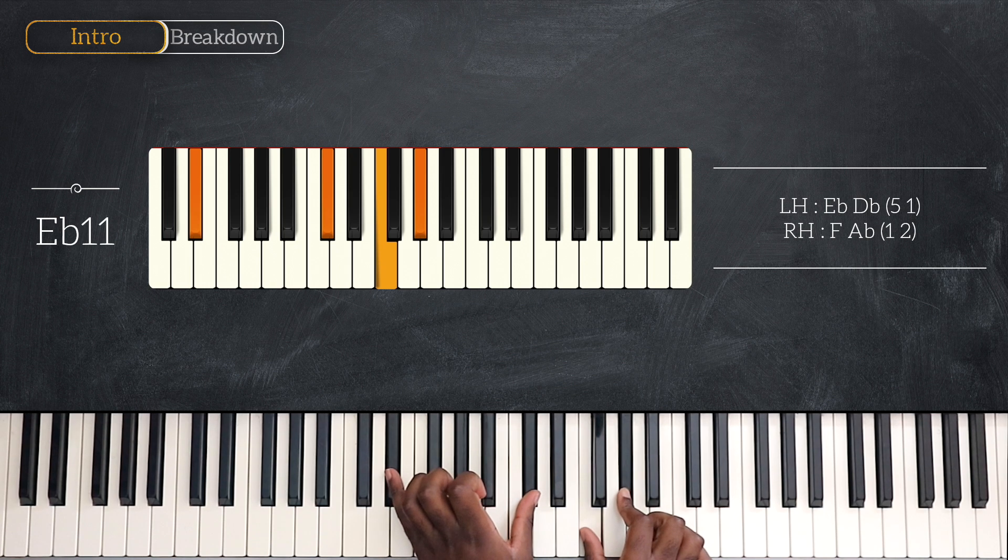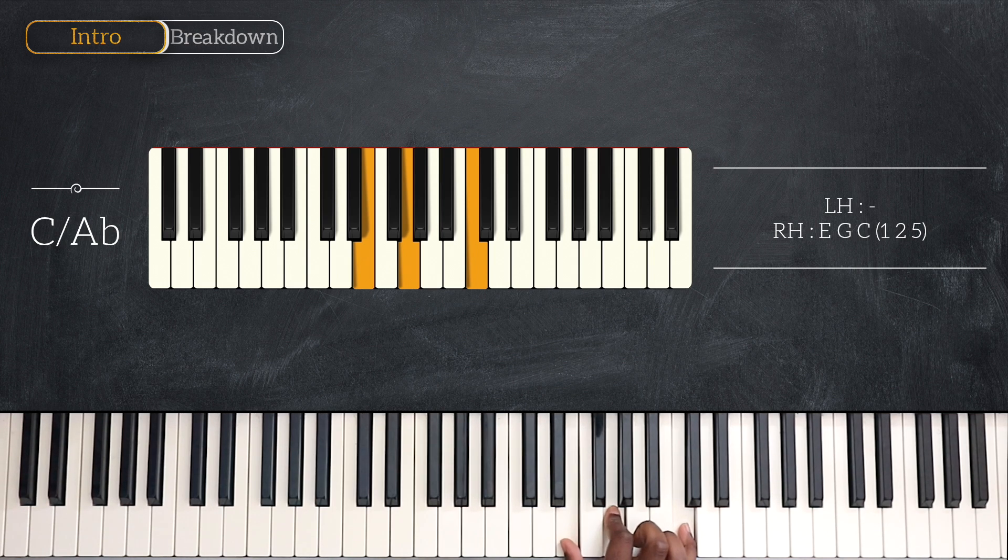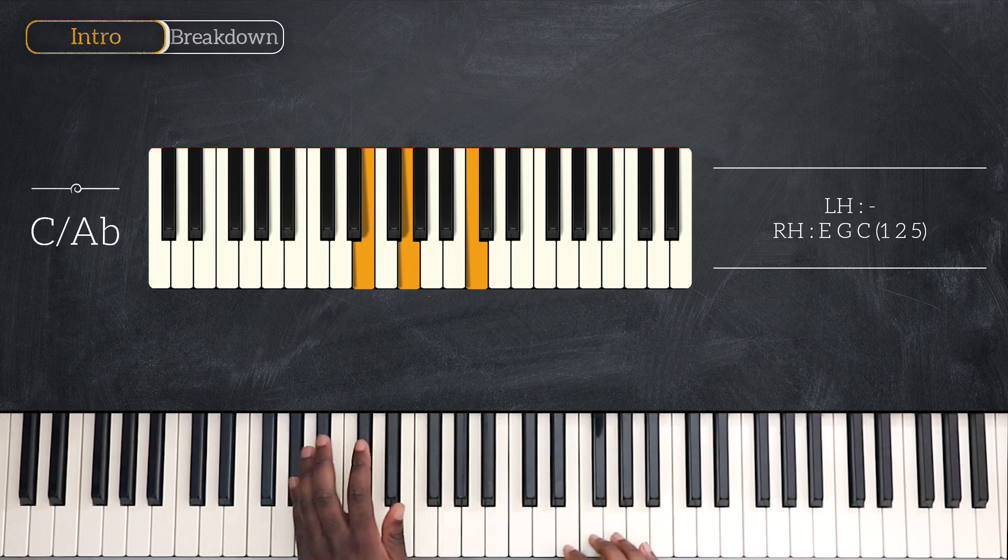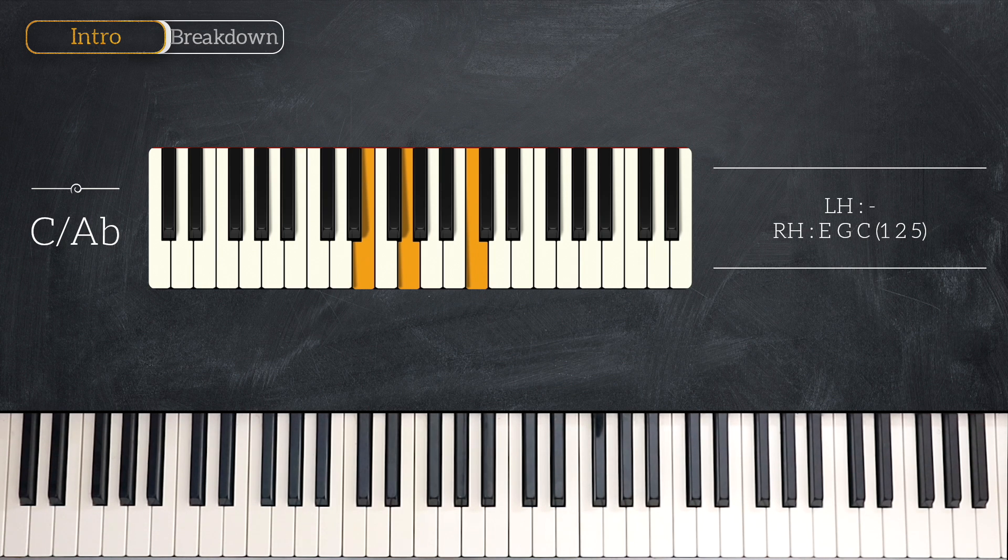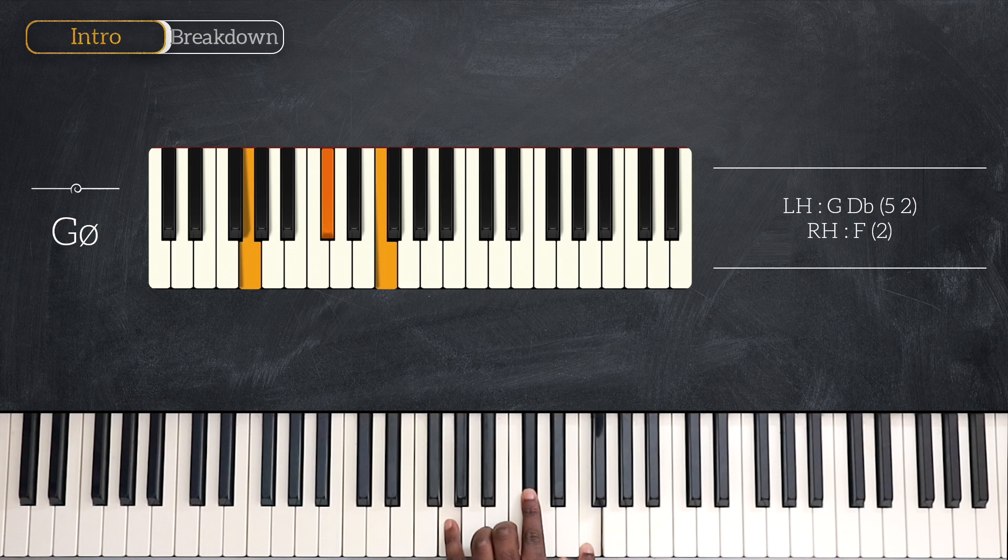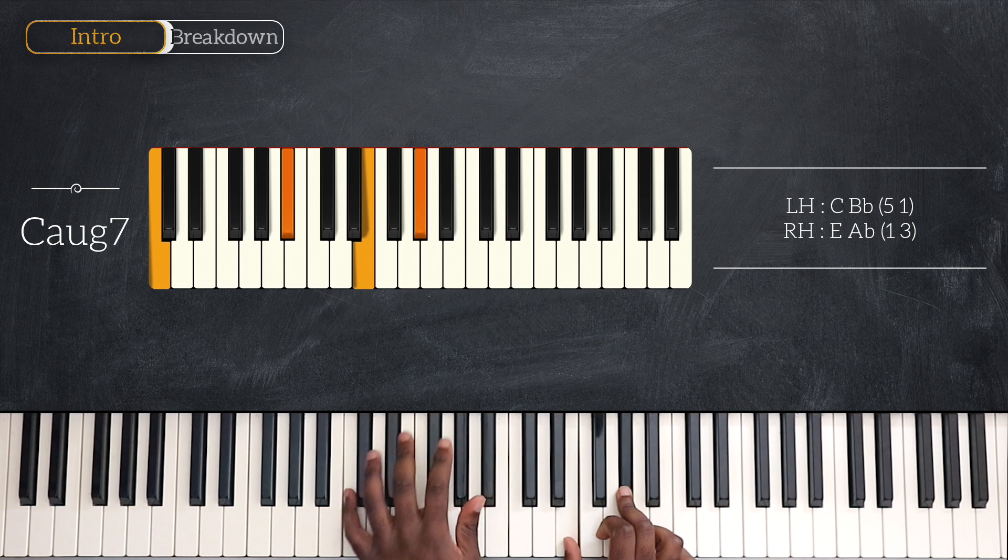After that, we have once again a rootless voicing, playing C over A flat. So we're only going to use the right hand for this one, playing C first inversion, so E, G and C. Then we have G half diminished, playing G and D flat on the left, and F on the right. Then C7 augmented: C and B flat on the left, E and A flat for the right.